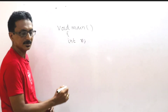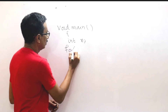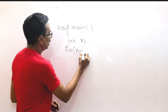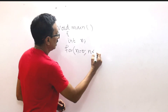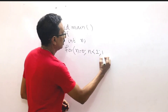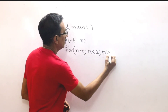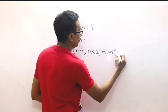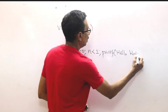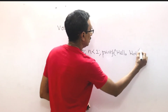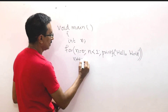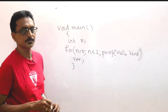For n equal to 0, n less than 1, print f hello world, n plus plus. That's all.